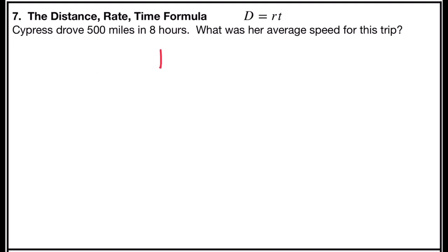So we have d, which stands for the distance, is equal to r, which is the rate multiplied by the time. In this problem, it says Cypress drove 500 miles. That would be the distance, so we'll substitute 500 for d.